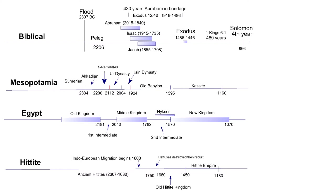However, the business of Egypt's 12th dynasty was continued under appointed rulers of the 13th dynasty, so trade would have remained fairly stable in Egypt, even until the foreign Hyksos rulers took over Egypt.